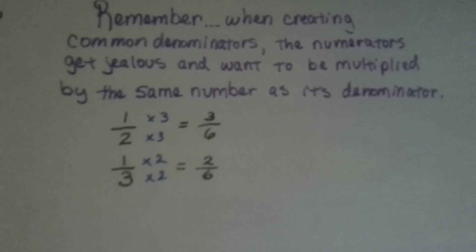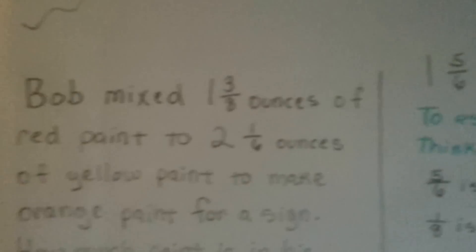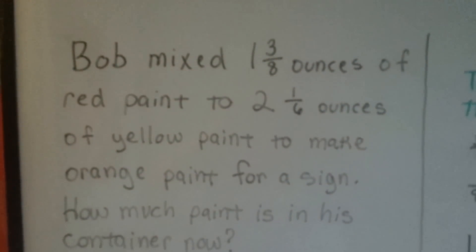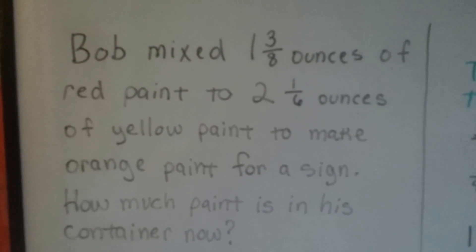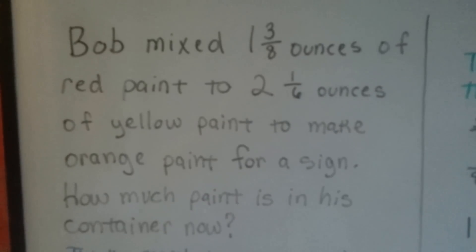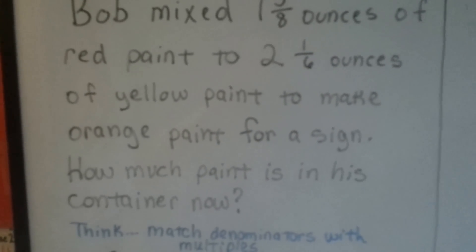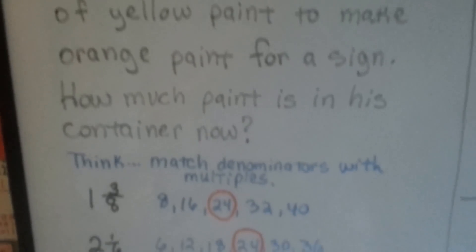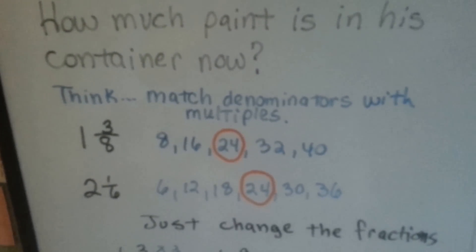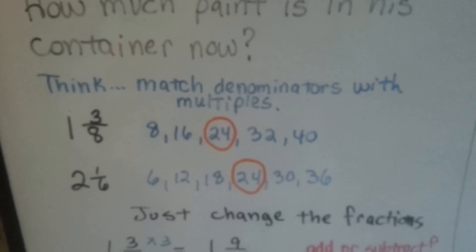We have a word problem. Bob mixed 1 and 3 eighths ounces of red paint to 2 and 1 sixths ounces of yellow paint to make orange paint for a sign. How much paint is in his container now? So we think, we need to match the denominators with multiples.